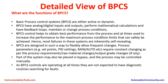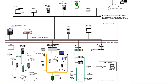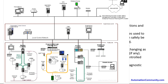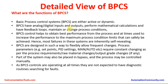We will go over the detail view of BPCS — basic process control system. What are the functions of the BPCS? Basic process control systems are either active or dynamic. They are always making changes in the plant process and doing the required control. BPCS have analog and digital inputs and outputs, performs mathematical calculations and have feedback loops, and maintain or change the process conditions.